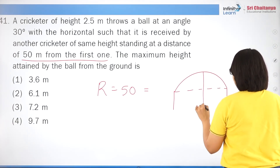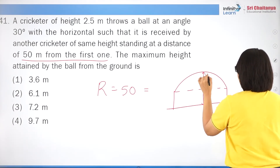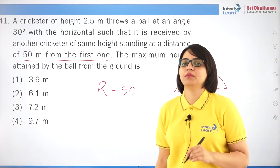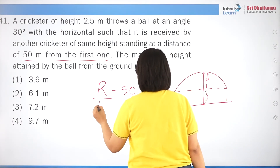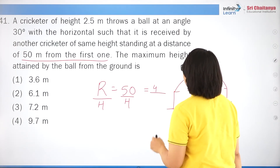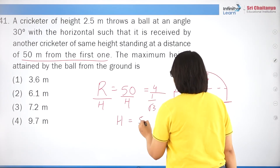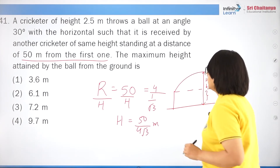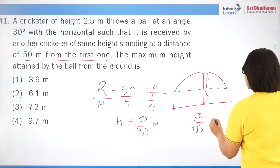Question 9: the horizontal range of a projectile is 4√3 times its maximum height. Using R/H = 4/tanθ, we get 4√3 = 4/tanθ, so tanθ = 1/√3, meaning θ = 30°. Correct answer is option 4.